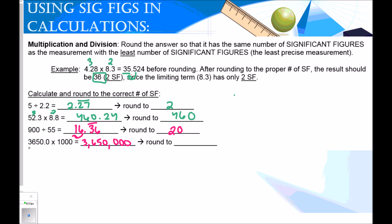And the next one. I've got 3,650 times 1,000. So I get 3,650,000. This number has one, two, three, four, five significant figures. But this number has one. So I need one significant figure in my answer. The 6 is going to round this up. So my final answer is 4 million. Again, putting no decimal in order to just have one significant figure.